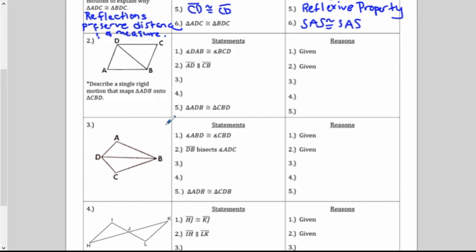All right, number two. We want to prove triangle ADB is congruent to triangle CBD. So let's look at the first given and mark it in. We have angle DAB congruent to angle BCD. Okay, we've got it marked in. Given two. This is the new part. AD is parallel to CB. I'm going to put the arrows.